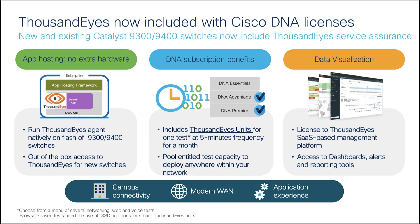Let's start with integration benefits. We have three main benefits here. Generally, when we host an application on the Catalyst 9000 platform, we will need external storage. With the ThousandEyes Docker application, we are able to host the ThousandEyes Enterprise agent without external storage — it will run natively on the flash of the switch. We are also shipping the ThousandEyes Enterprise agent pre-loaded on new orders of Catalyst 9300 and 9400 switches.